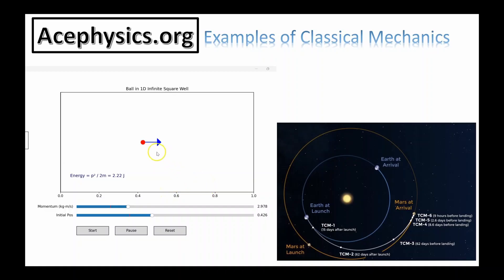This is an applet I created which has a ball inside of a box. The ball starts with a defined position. In this case, it's 0.4 meters from the left side of the box.